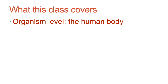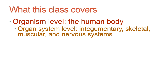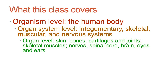In this class, for Anatomy and Physiology 1 as well as Anatomy and Physiology 2, we are going to learn about the human body by breaking it down into different systems. In Anatomy and Physiology 1, the organ systems we're going to focus on are the integumentary system, the skeletal system, the muscular system, and the nervous system. Within each of those systems, we are going to look at the organs — so we're going to look at skin, bones, cartilages, and joints.